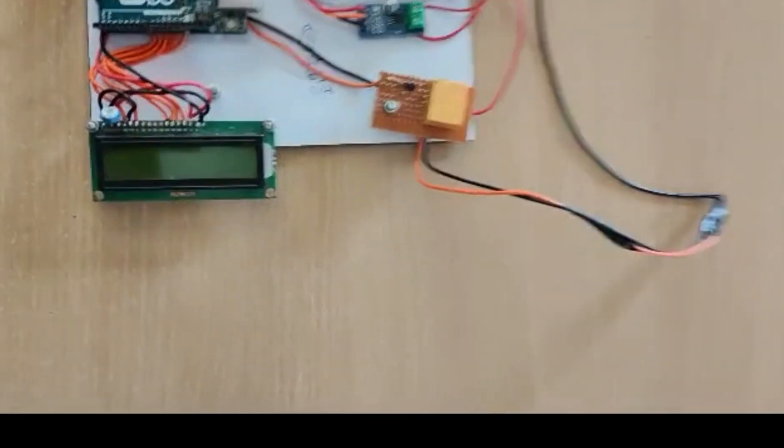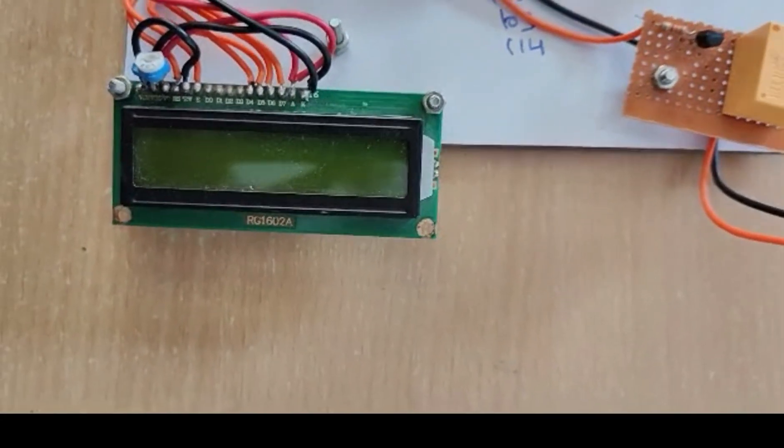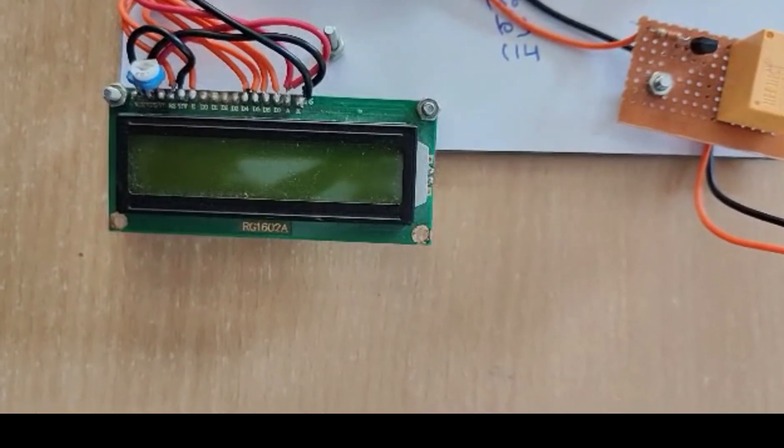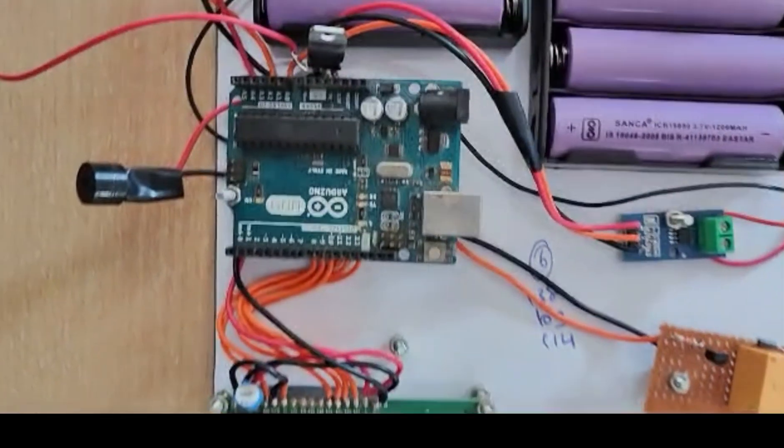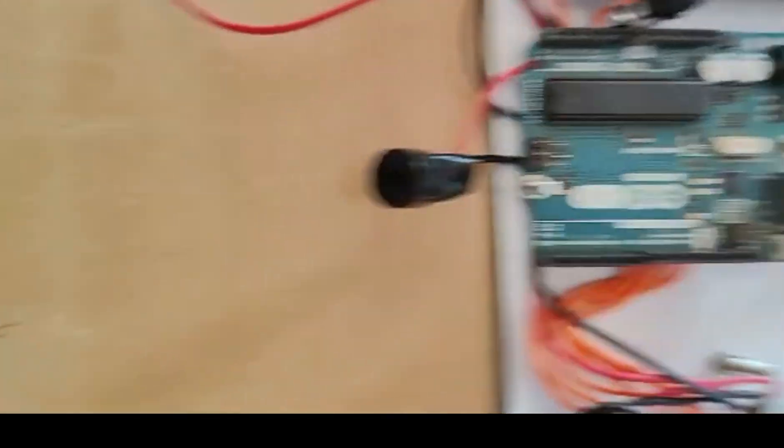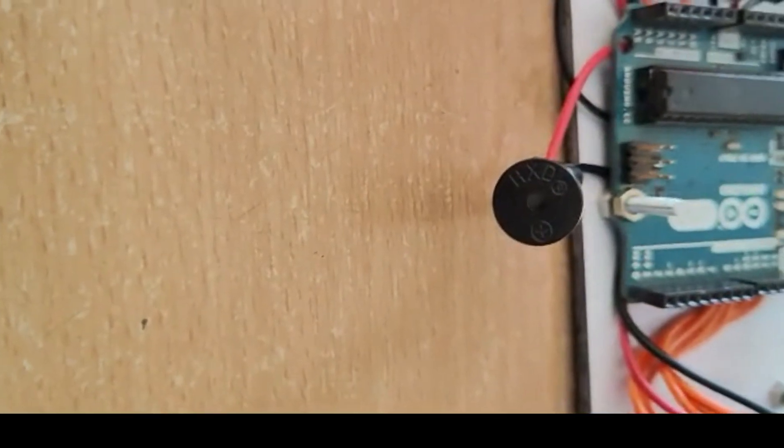Here we have placed the LCD panel which displays the parameters and is connected to the Arduino. We have placed an alarm which indicates when the temperature exceeds the optimum temperature, that is 40 degrees Celsius.